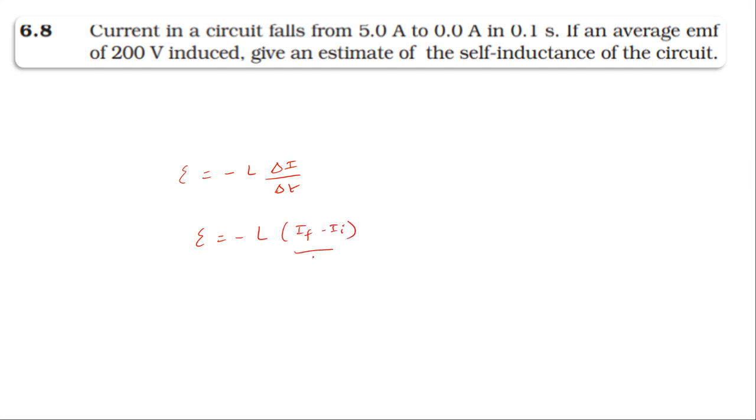The induced emf is 200 volts, so 200 volts equals minus L times final current zero minus initial current five divided by time. Initial current is 5, final current is 0, time is 0.1 seconds.